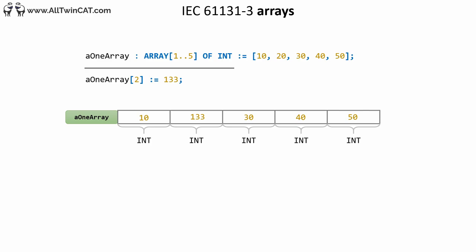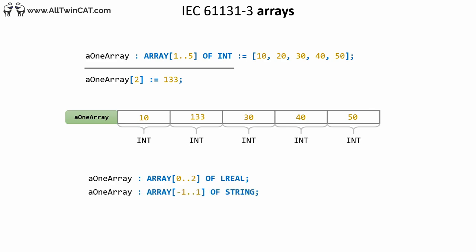You can assign a new value to any element in the array by writing the name of the array, brackets, the position of the element, and then the new value. So here we have replaced the value 20 at position 2 with the value 133. Compared to most other programming languages, an array in IEC 61131-3 can be declared to start and end at basically any position. In the first example we had an array starting at position 1 and ending at 5. We can also start at position 0, which is more traditional, or even at minus 1.